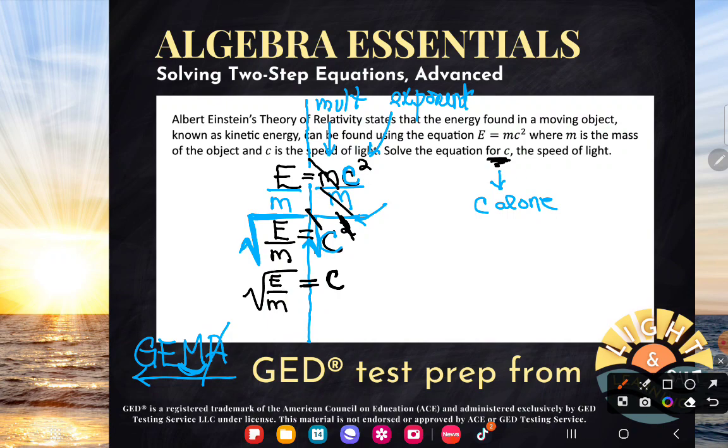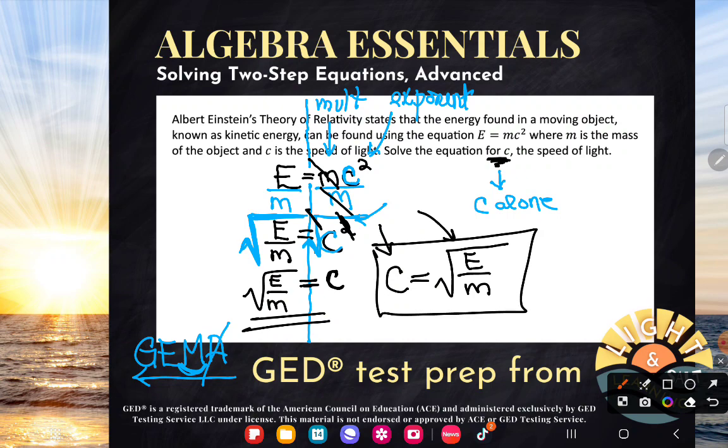Now, with literal equations especially, we usually do like the letter on the left. It's not wrong if you leave it this way. Just, we like it with the letter on the left, just so it's really clear what c is, since it's a more complex expression here. So, c is the square root of e over m. So, basically, this just says, if I wanted to find c, I could do this work. But that being said, that sucker's solved.